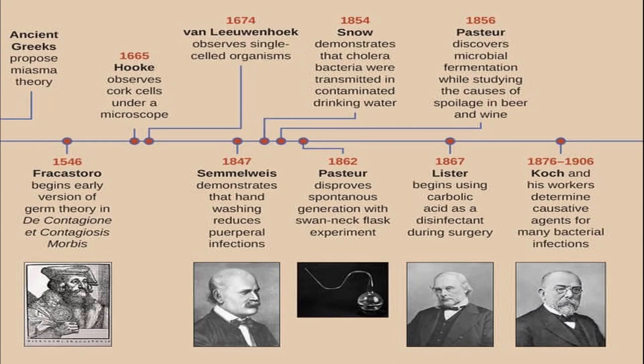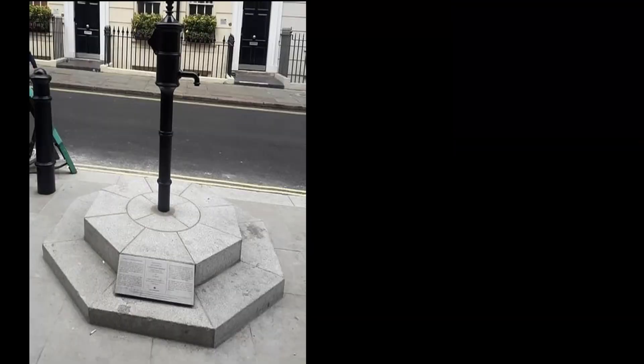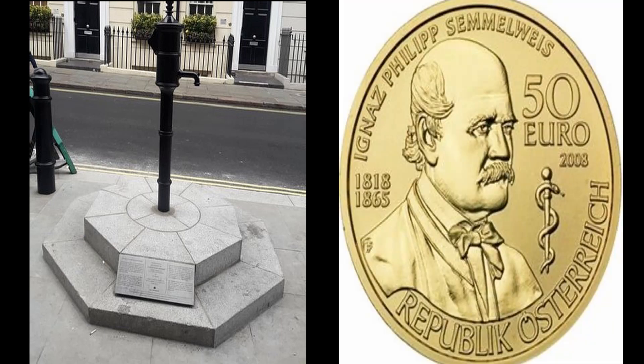The scientific journey from the belief in miasma theory to the acceptance of germ theory is an example of how dogmatic views can hinder progress. Even though the earliest proposers were mocked at their time, they are now considered to be heroes and revolutionaries. A replica pump was reinstalled in Broad Street in remembrance of John Snow in 1992, and in 2008 a coin in honor of Ignaz Semmelweis was created in Austria.